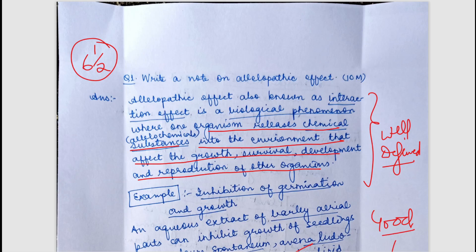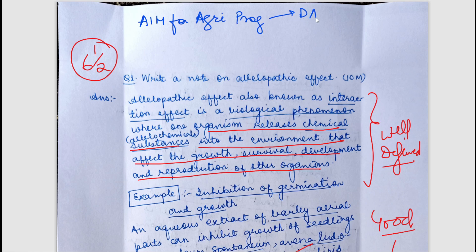Hello everyone, hope you all are doing well. Today we are going to discuss the answer sheet of our Aim for Agriculture program. We have daily answer writing practice and weekly full tests. Around 20 students have joined the program and all are writing very good answers. We generally choose a copy that is well written and clear so that answers are visible in the video.